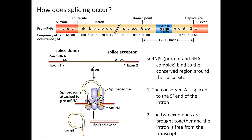The beginning of the intron has another name — it's called the splice donor — whereas the end of the intron is called the splice acceptor.